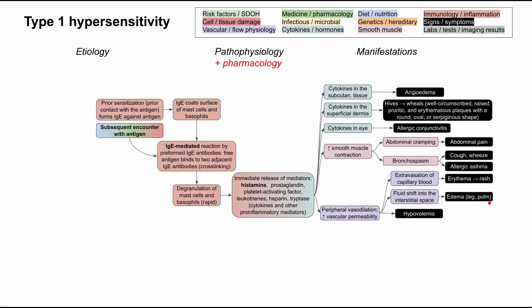All of this fluid leaving the vasculature — capillary blood and extra fluid — results in hypovolemia, so the patient reacts as if dehydrated. With low volume in the vascular space, the patient can become tachycardic and develop hypotension, low blood pressure. Having blood contents spill into the tissue can also cause itchiness, so the patient may have pruritus. A lot of downstream effects stem from this increased vascular permeability.